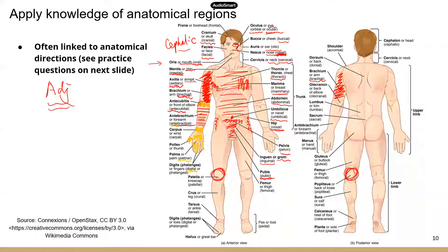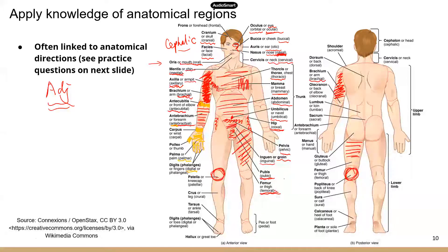Looking at the different parts of the leg, the thigh is known as femoral. Just like the arm, the term is the same whether you're looking at the anterior or posterior parts — both are femoral. Inferior to the thigh is the knee area. The front of the knee, the kneecap, is patella, and the back of the knee is popliteal.